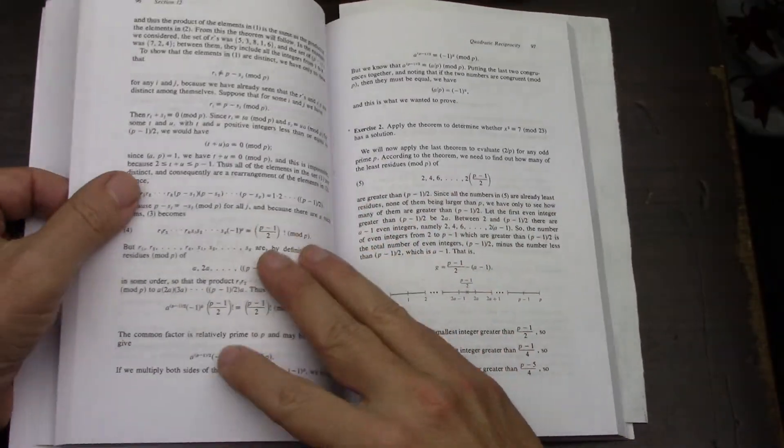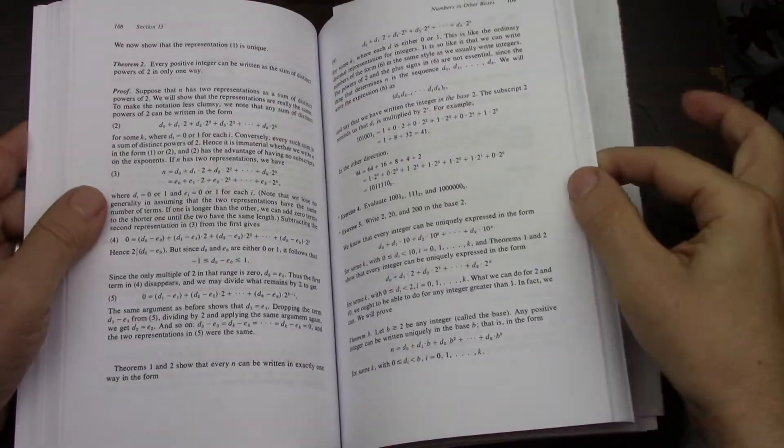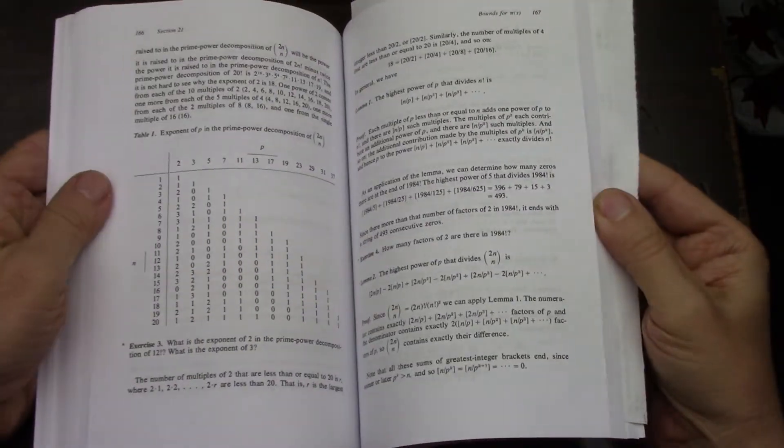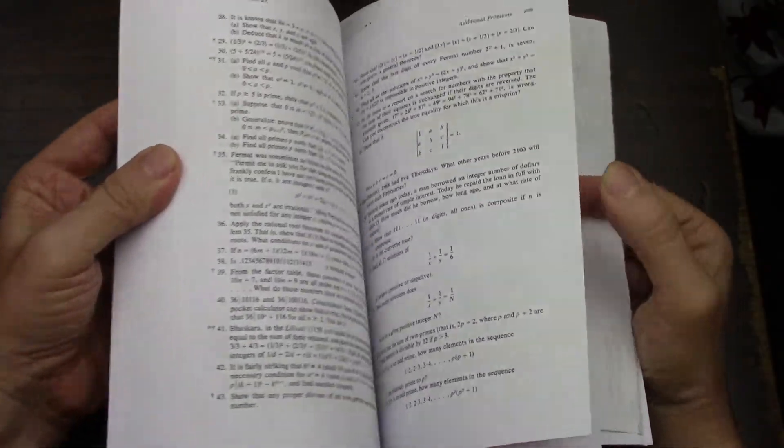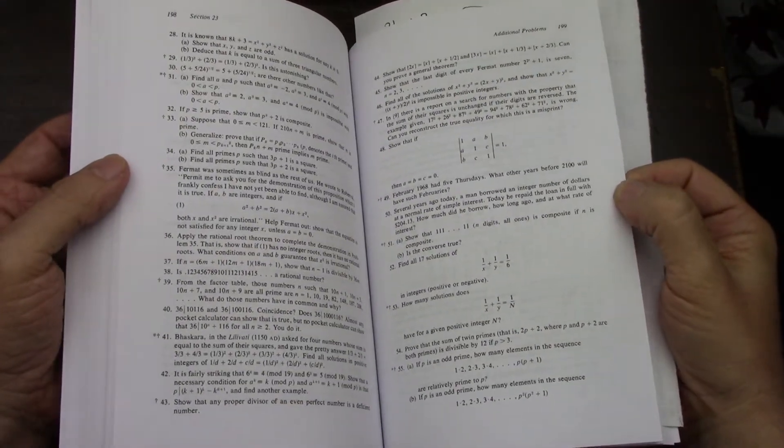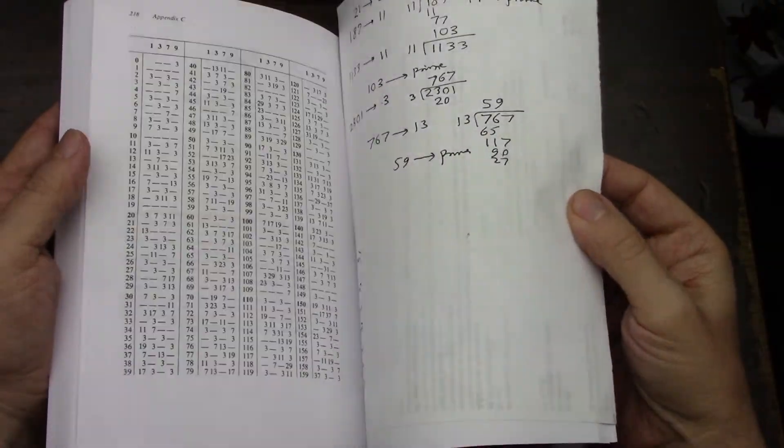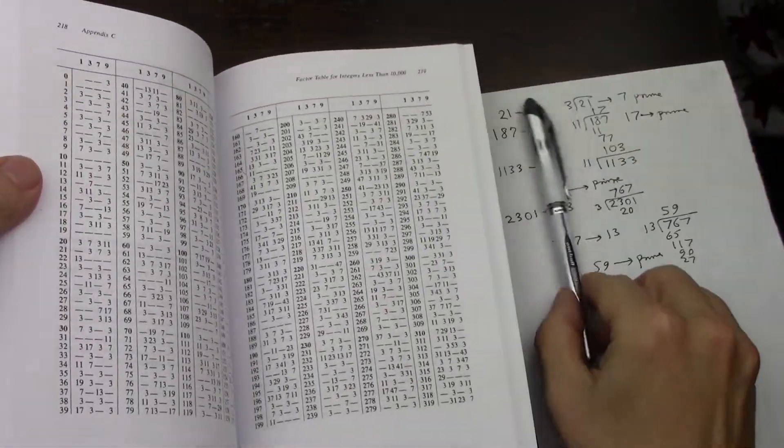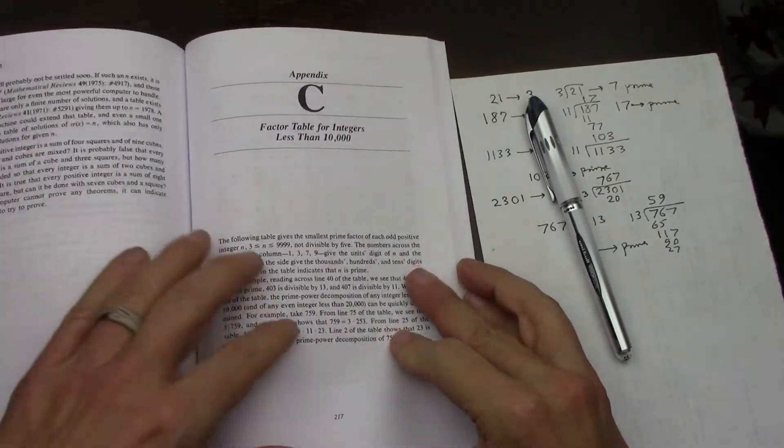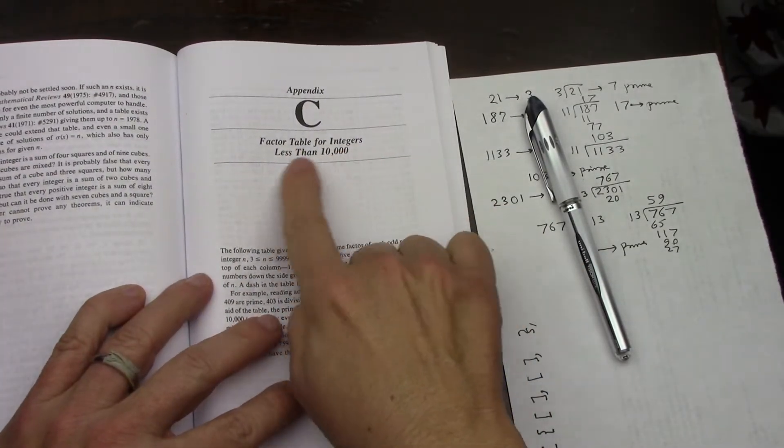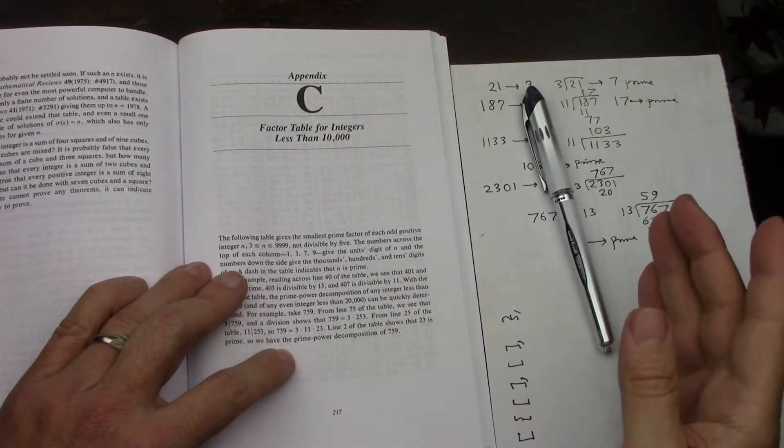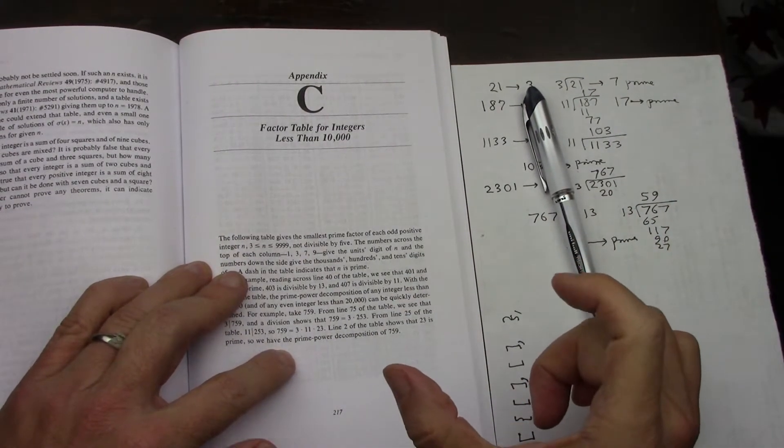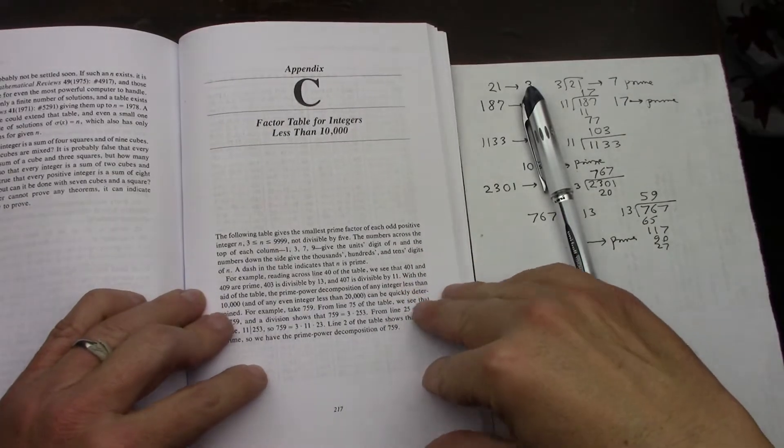So I'm not going to page through the whole book, but definitely it's got all the bones of number theory, for sure. And at the end, it's got a table. This is why the pen is here. It's a factor table for integers less than 10,000. So you take any integer, and you say, I want to get the prime number factorization for it, and with this table, you can do it.